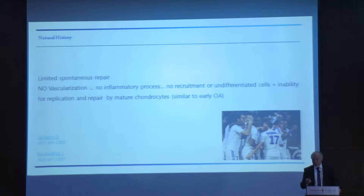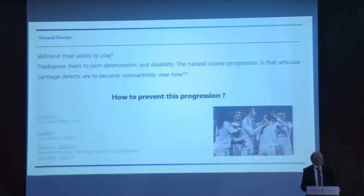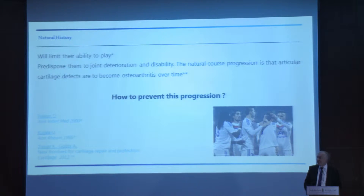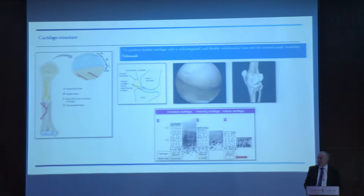The evolution is very long, and it can take sometimes 20 to 30 years to lead to osteoarthritis. When there is a cartilage lesion, it can limit the ability to play for the footballer, and also it predisposes them to joint deterioration and disability. The natural history of these cartilage lesions is to become osteoarthritis over time, and the question is how we can prevent this.